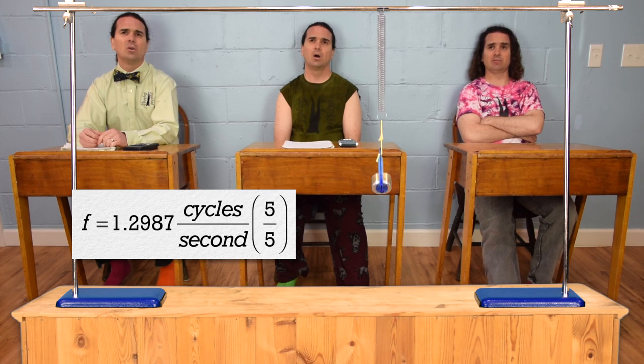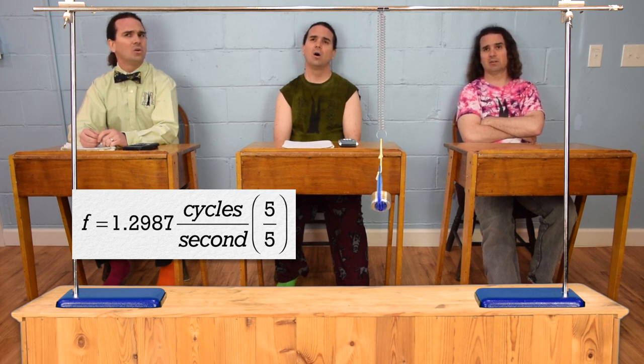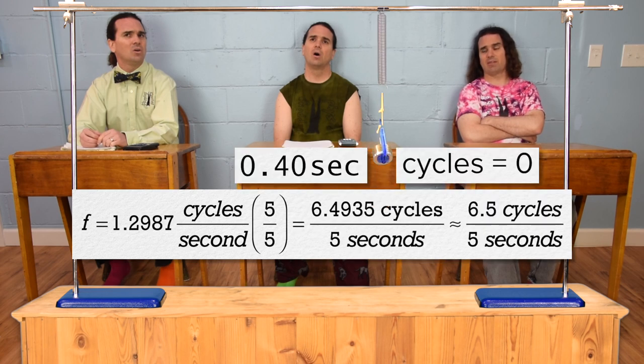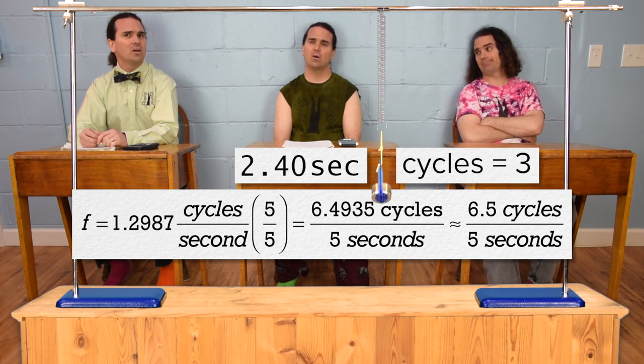And it's a whole lot easier to see when it's gone through half a cycle than 0.3 cycles. What? Yeah, what? Multiply frequency by 5 over 5, which is just 1, and you can multiply any number by 1, because it does not change the number. 1.3 times 5 is 6.5, and therefore we get 6.5 cycles in five seconds.